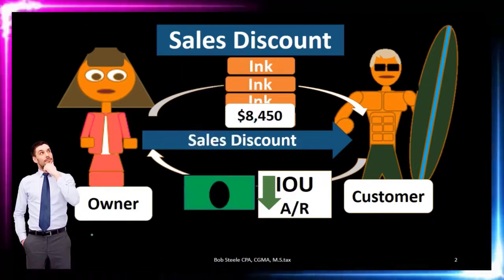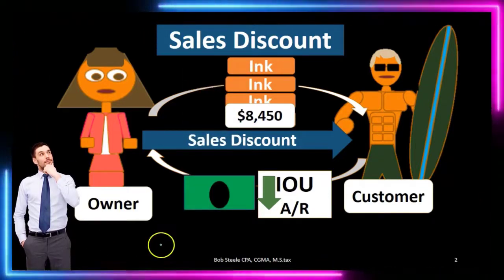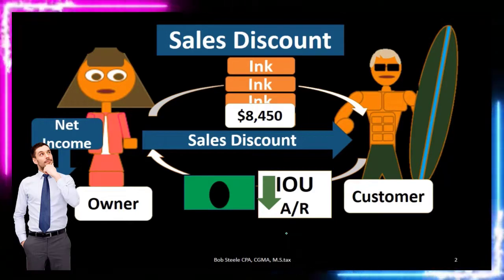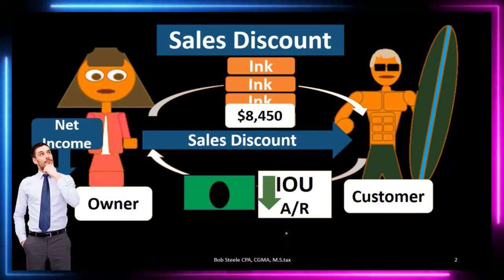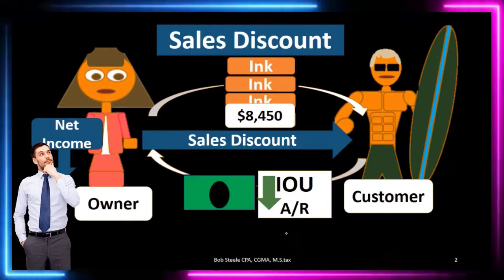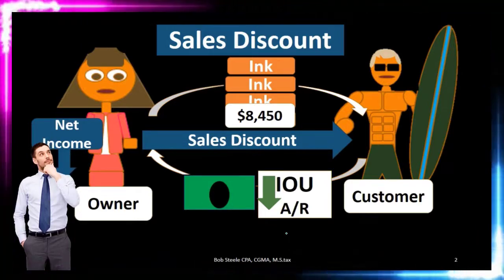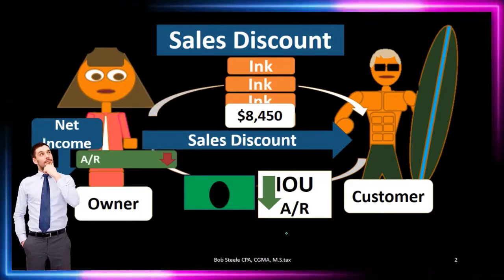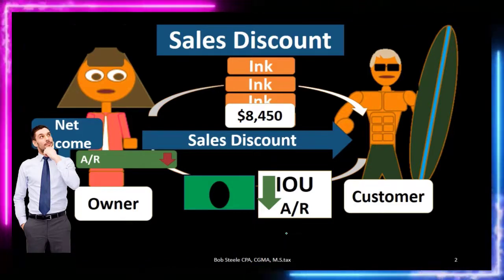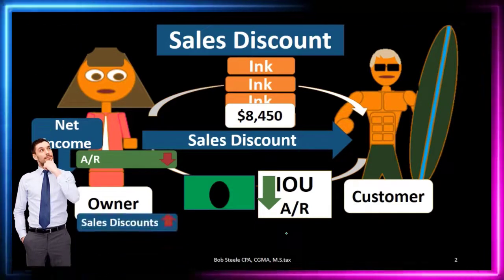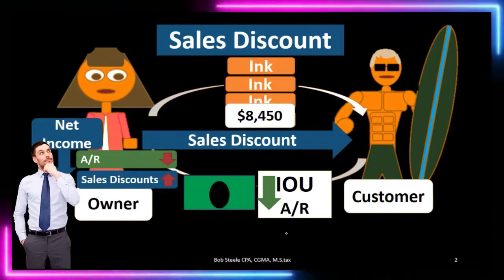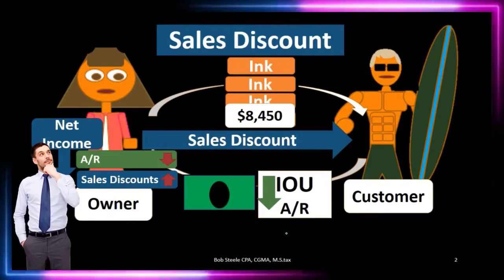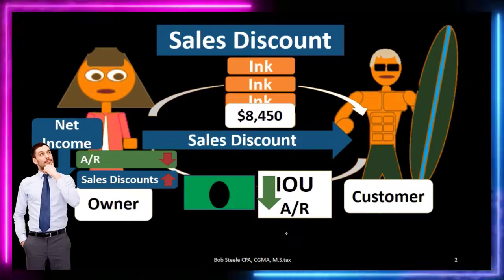The accounts receivable — the IOU we recorded at the full sales price — will go down. The eventual cash we receive will be less than originally recorded, and net income is also going to go down. When we recorded the sale we recorded it at the full sales price, and now giving a discount reduces net income. The journal entry: accounts receivable goes down, and the sales discount account goes up. The sales discount acts like an expense but is more of a contra revenue account — it goes up and brings down net income.